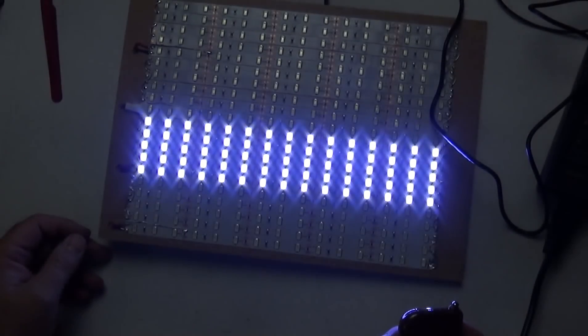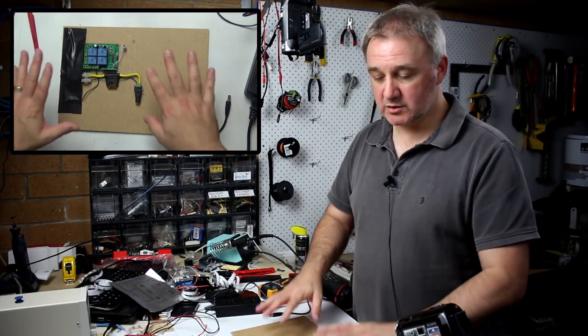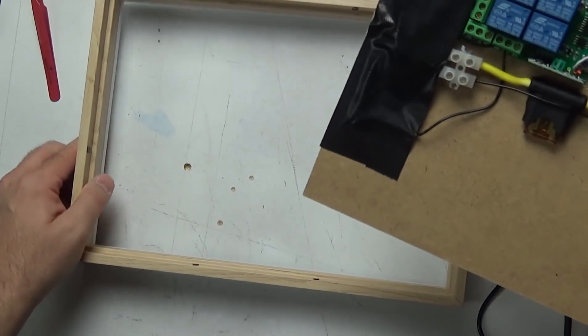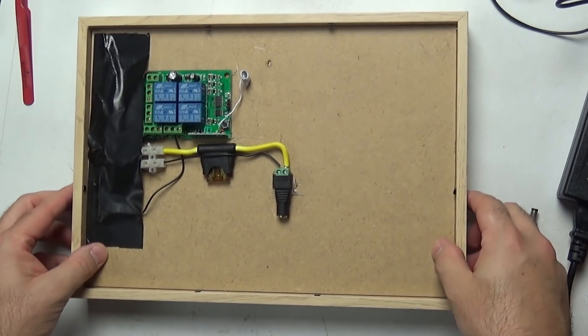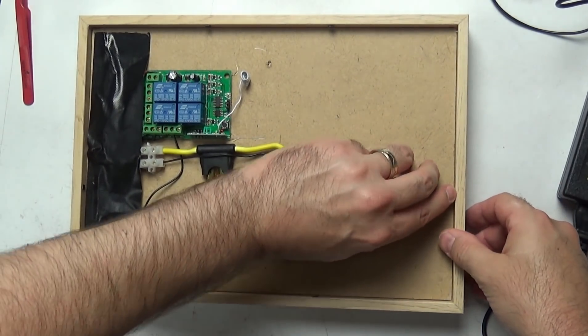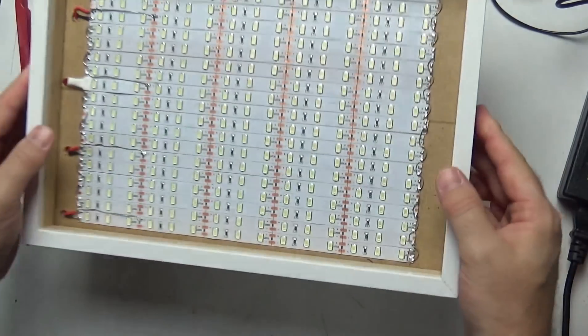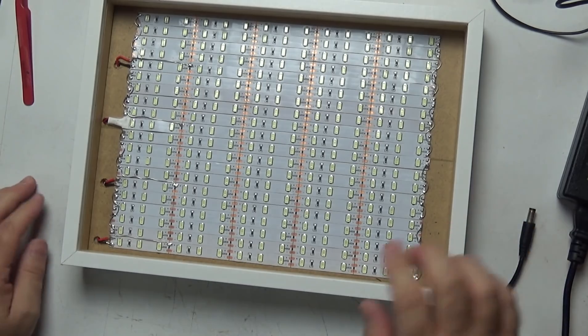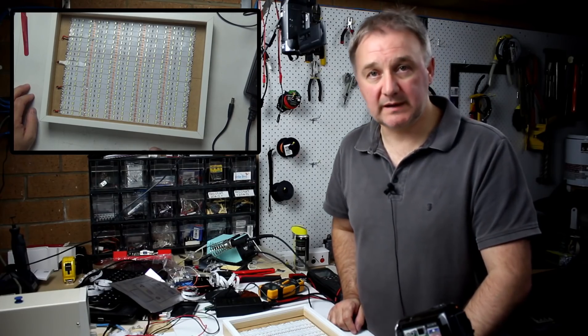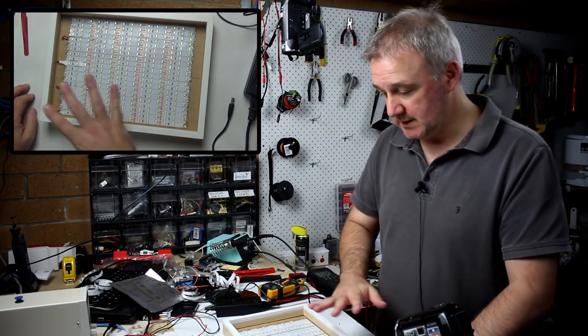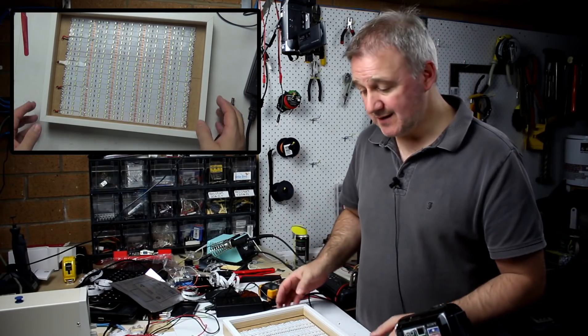Alright, so it's time to put this back into the picture frame, so grab your picture frame. Okay, so that's all in, fold down those tabs, and at that point, you actually have a functional LED light panel, but we're going to put that glass back over the front for a diffused look, because otherwise it's quite stark.